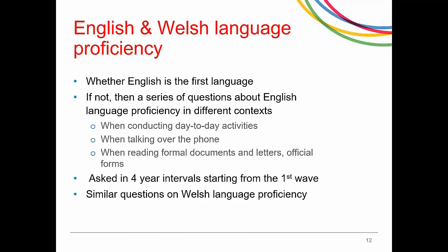The first set of questions concerns language proficiency. Respondents are asked about English language — whether it is their first language. If they say no, they're asked about their proficiency in English in various contexts: when conducting day-to-day activities, when talking over the phone, when reading formal documents and letters, and so on. This series of questions was asked for the first time in wave one, and then at four-year intervals.